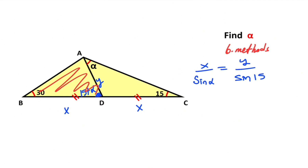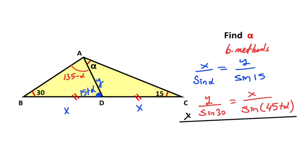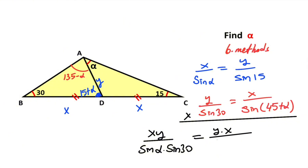Likewise for the other triangle, if we apply the sine rule — note that here is (135 minus alpha) degrees — therefore y over sin(30°) equals x over sin(135° − alpha). You know that sin(135° − alpha) equals sin(45° + alpha). Then if we multiply these two equations together: x·y over sin(alpha)·sin(30°) equals y·x over sin(15°)·sin(45° + alpha).